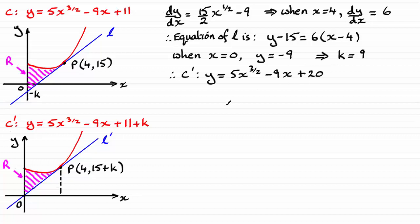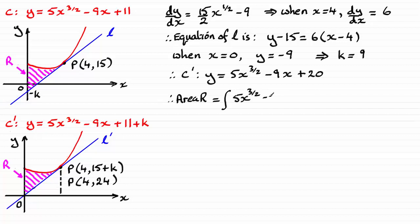And clearly our y-coordinate for P is now going to be 15 plus 9, so that's 24. So we've got our new value of P having coordinates (4, 24). So I need to get the area of R — therefore the area of R. We're going to integrate the curve: 5x to the power 3 over 2 minus 9x plus 20. There are several terms here so make sure we put it in brackets. We're integrating with respect to x between the limits of 0 and 4, which gives us all of this area up to the point with x-coordinate 4.